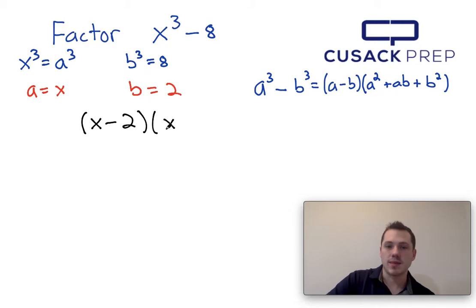Instead of a squared, I'm going to write x squared. Instead of plus ab, I'm going to write plus a times b, which is x times 2. And instead of b squared, I'm going to write 2 squared.